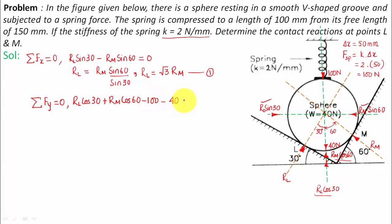So R_L cos 30 plus R_M cos 60, well 100 is in the downward direction so minus 100, 40 is also in the downward direction minus 40, everything shall be equal to zero. What I'm going to do right now, I'm going to be doing this substitution. R_L is equal to root 3 R_M.